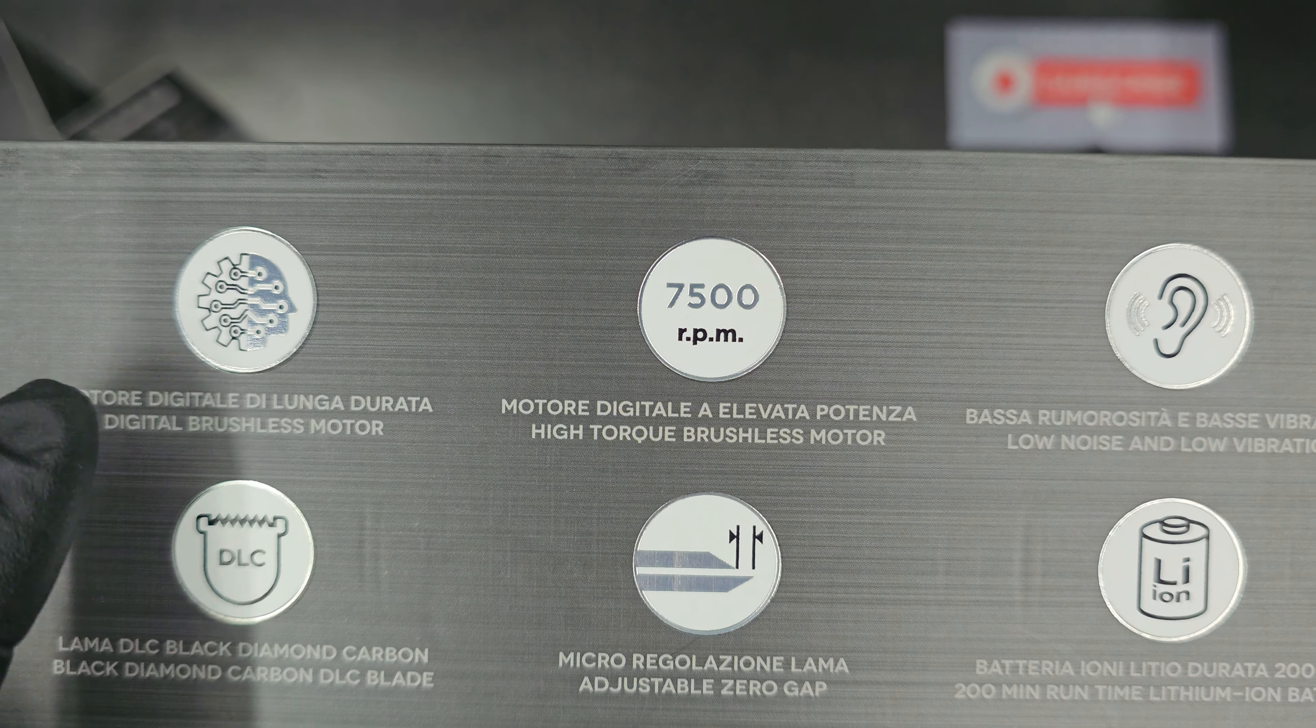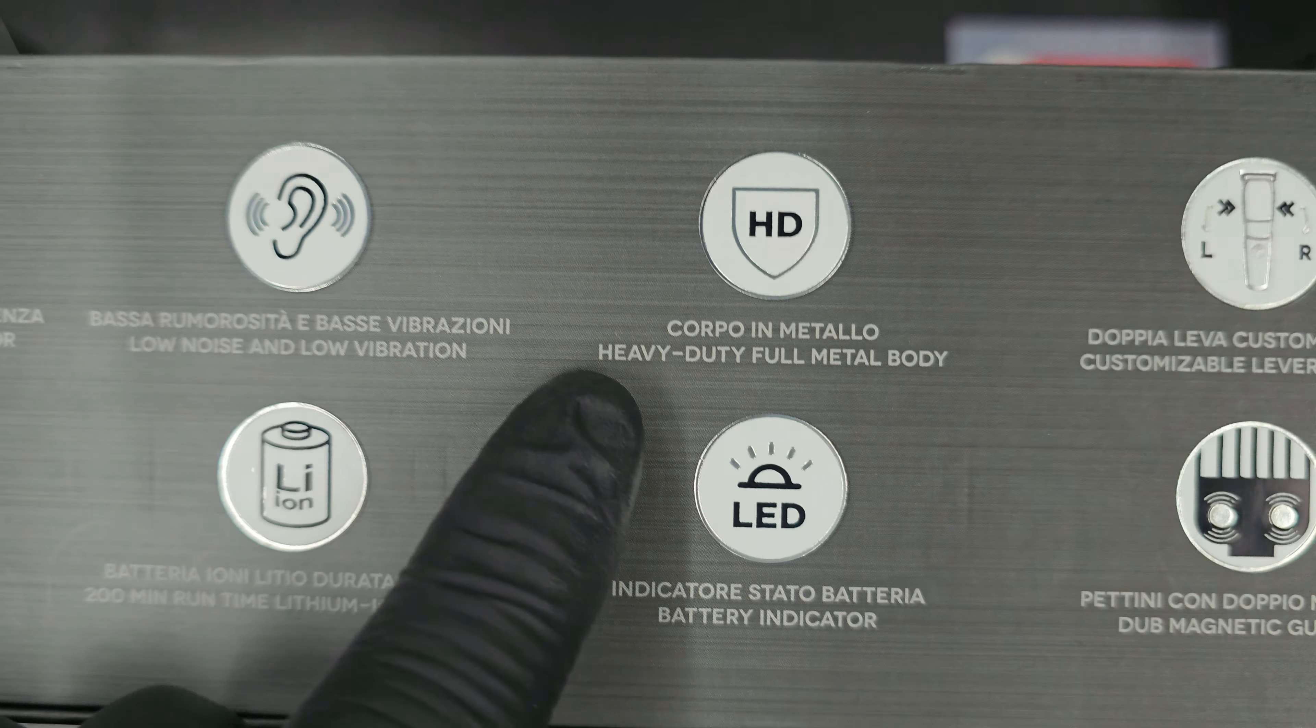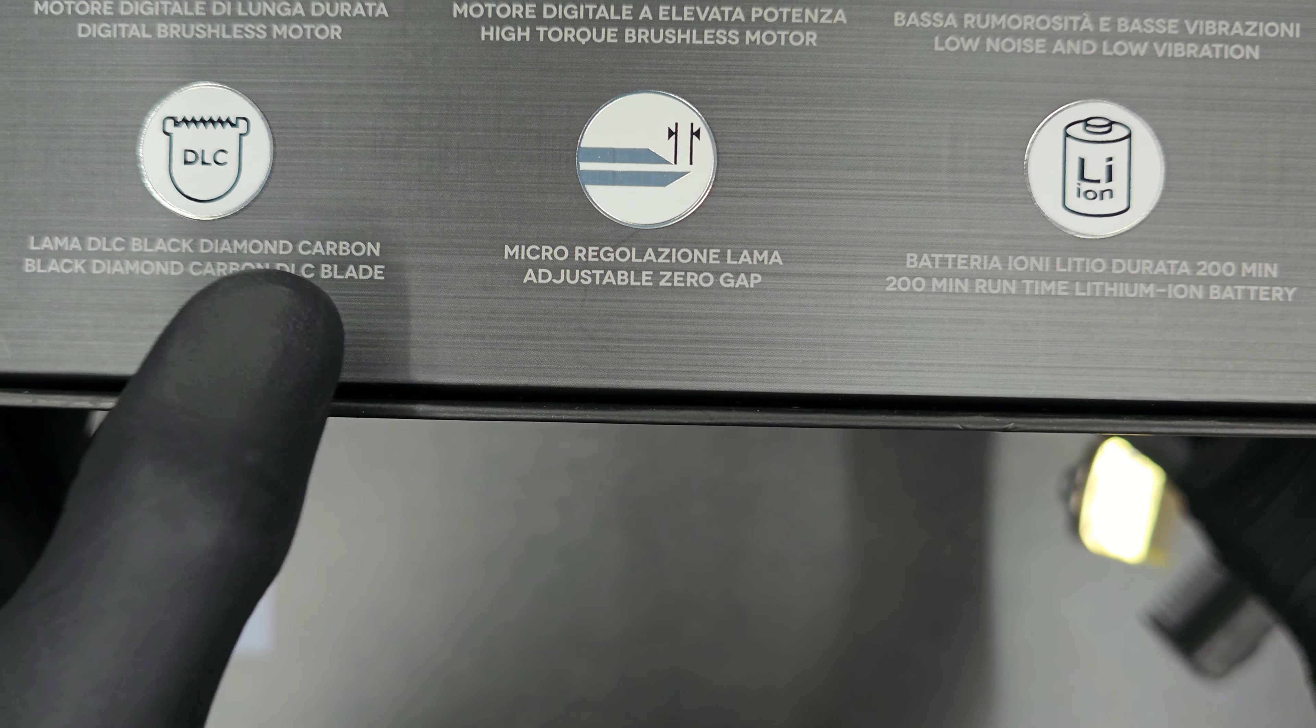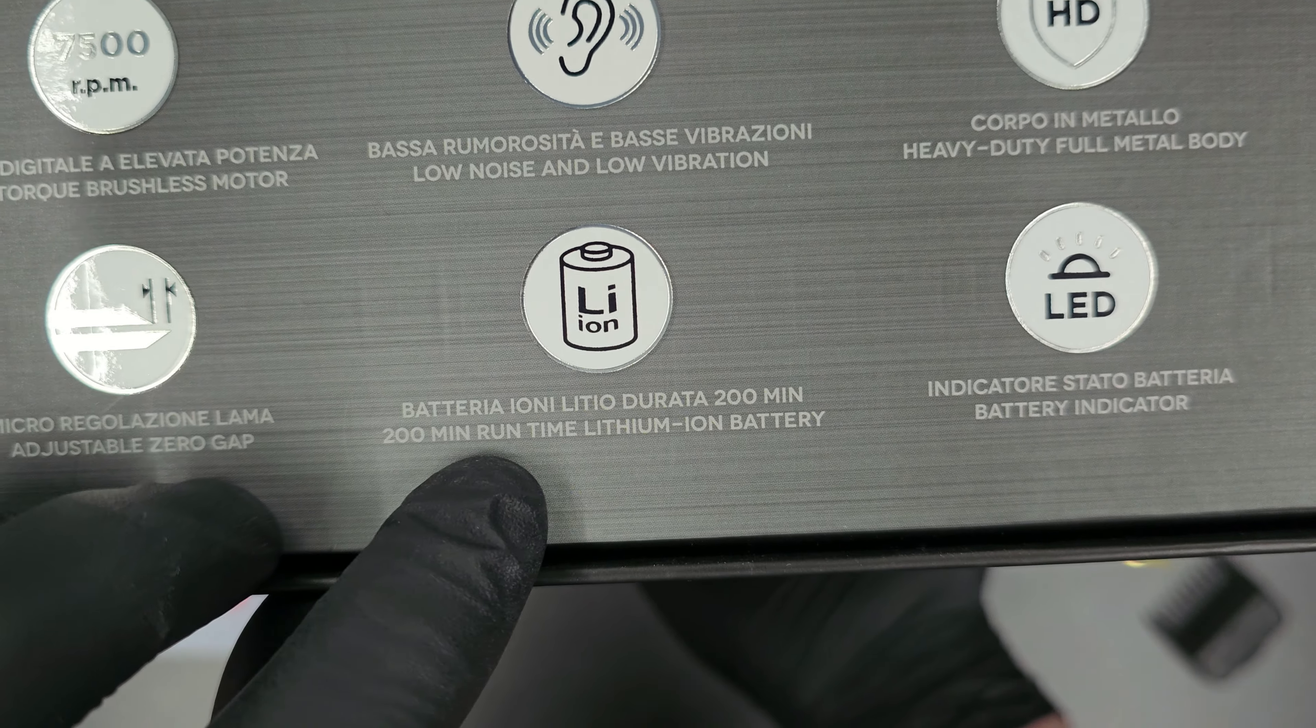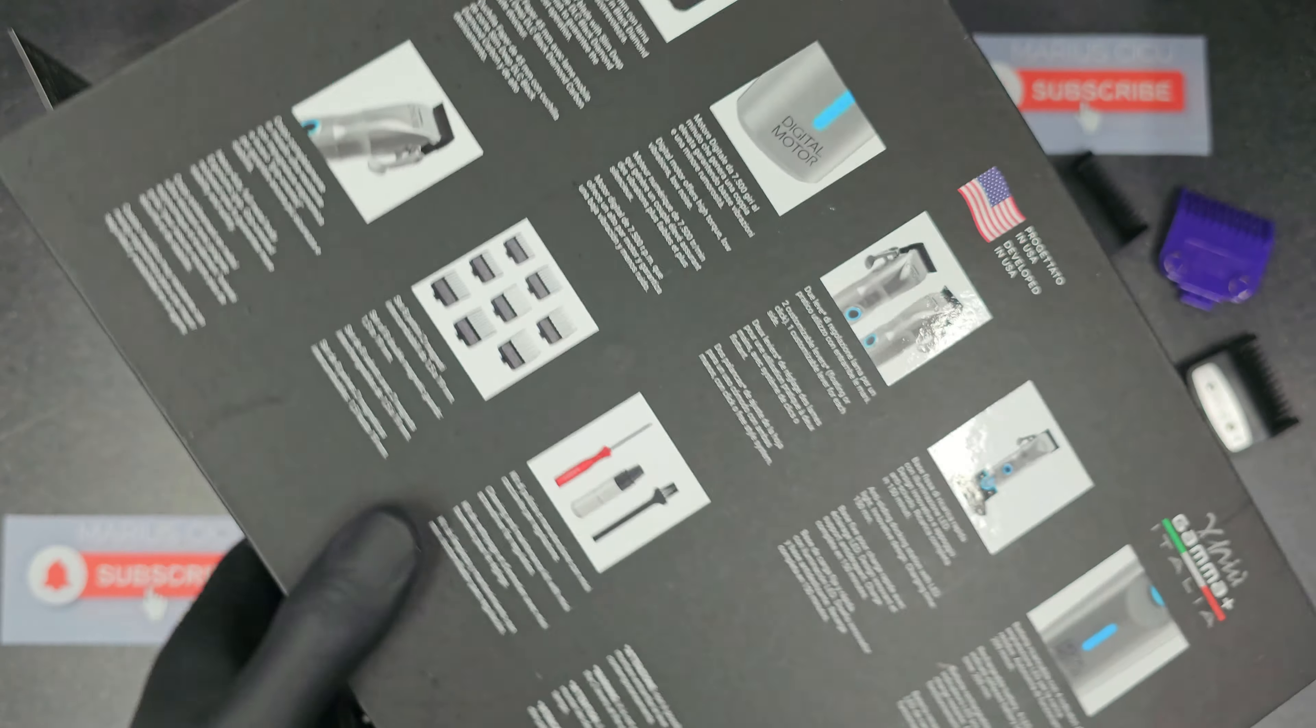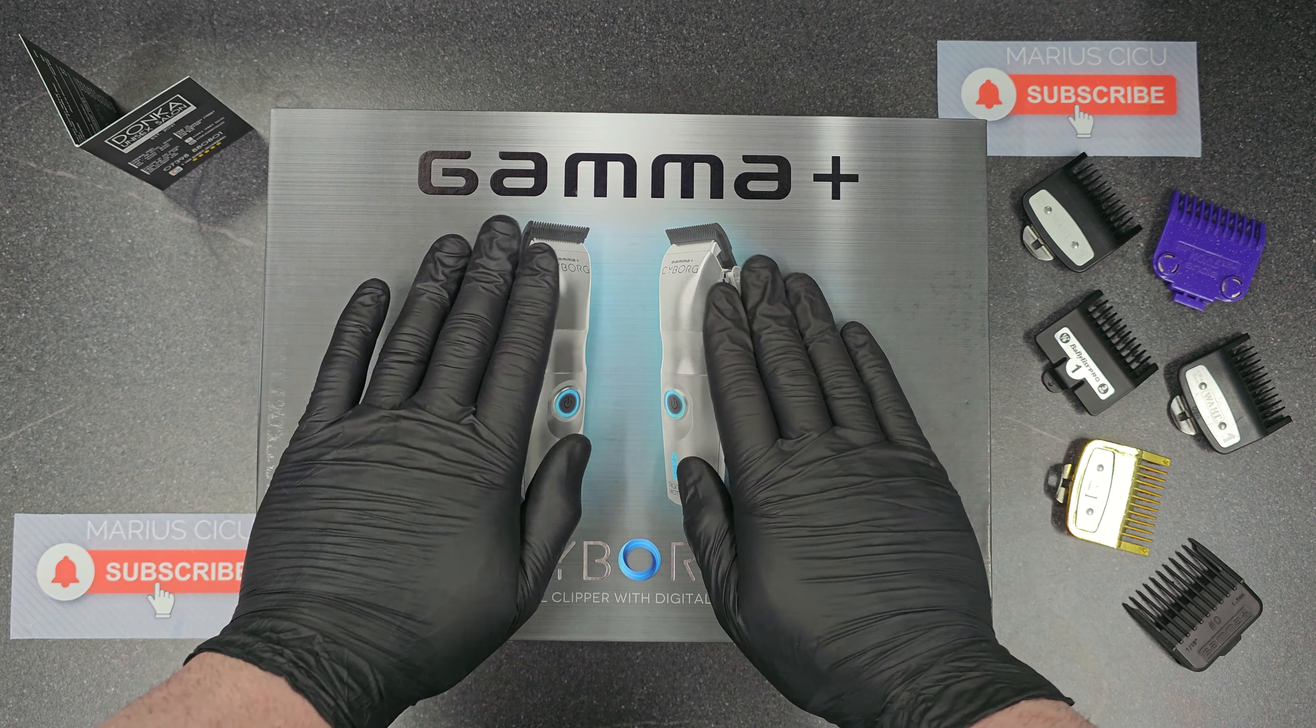Digital brushless motor, that's really new. High-torque brushless motor, low noise and low vibration. Heavy-duty, full metal body. Customizable lever position. Black diamond carbon DLC blade, adjustable zero gap. 200 minutes run time, lithium iron battery. Battery indicator. It comes with domed magnetic guards.